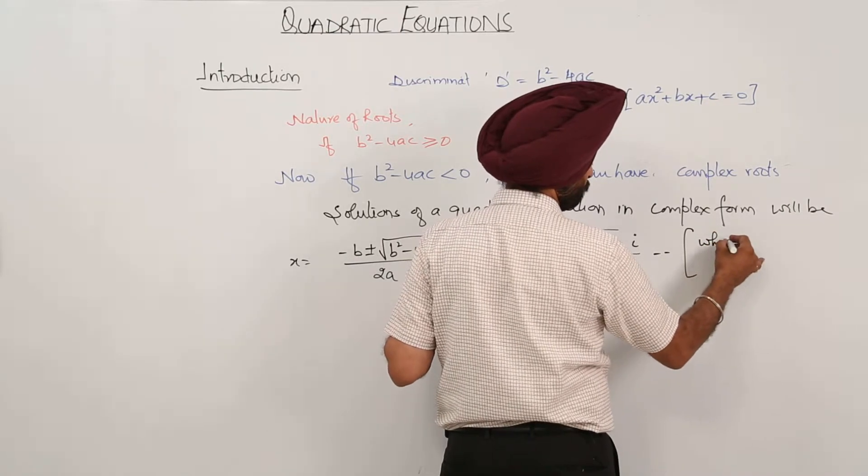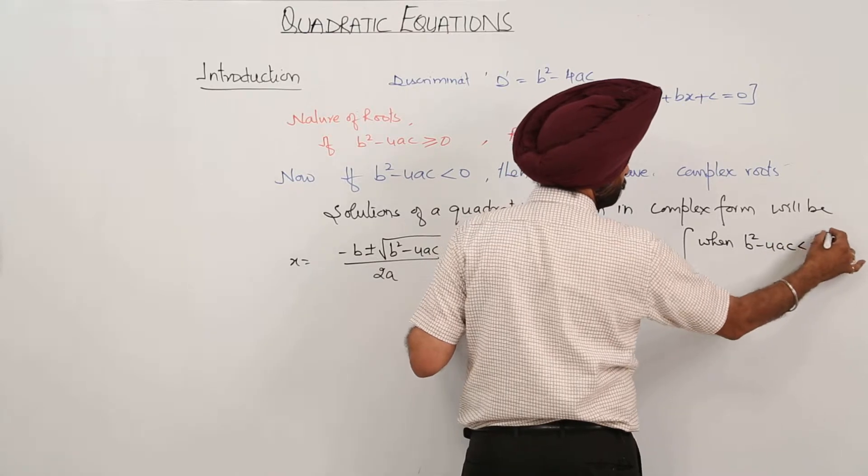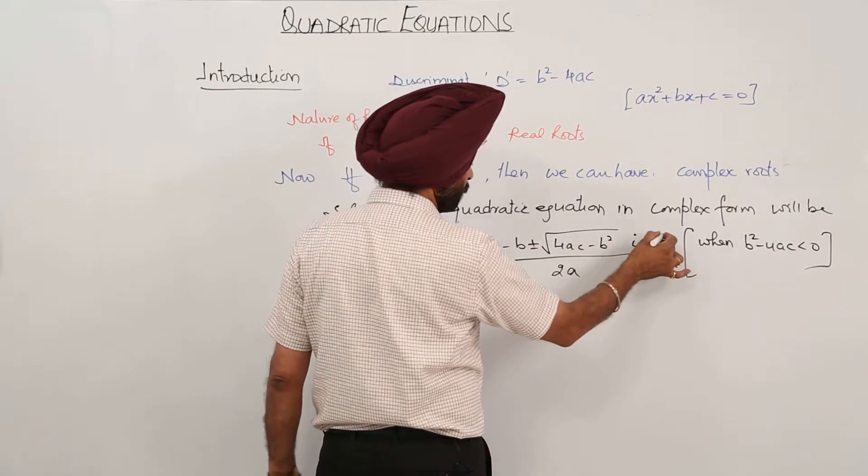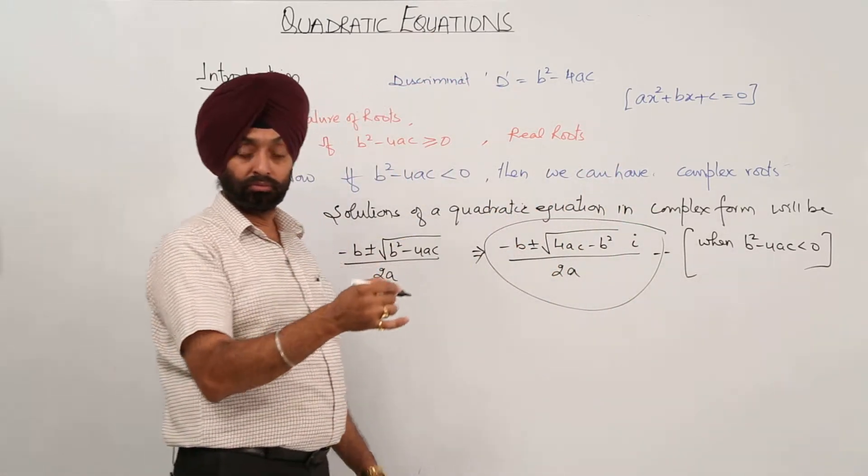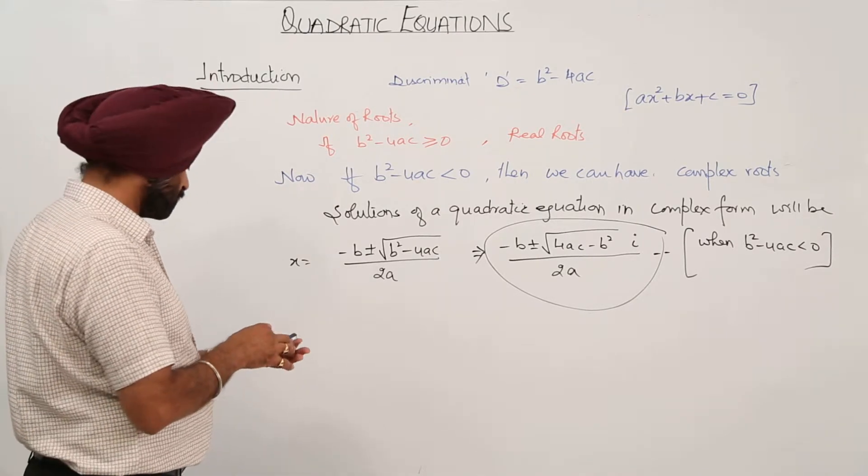When b square minus 4ac is less than 0, then we will be having which one? We will be having this part. These will be the roots.